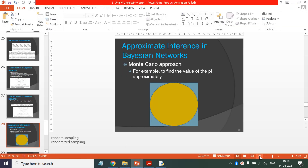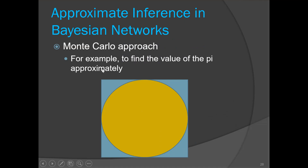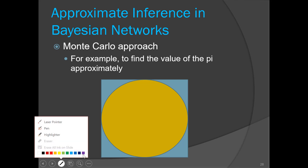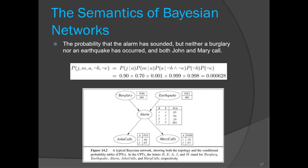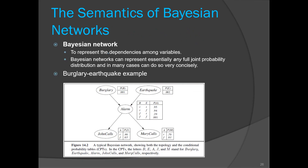Let us see inference in Bayesian networks — sometimes it is also known as a belief network. This Bayesian network is actually a graph, and more specifically it is a DAG graph, that is a directed acyclic graph. Let me explain this through an example.